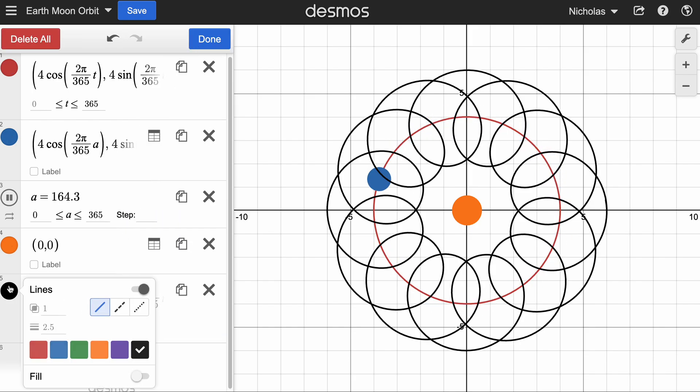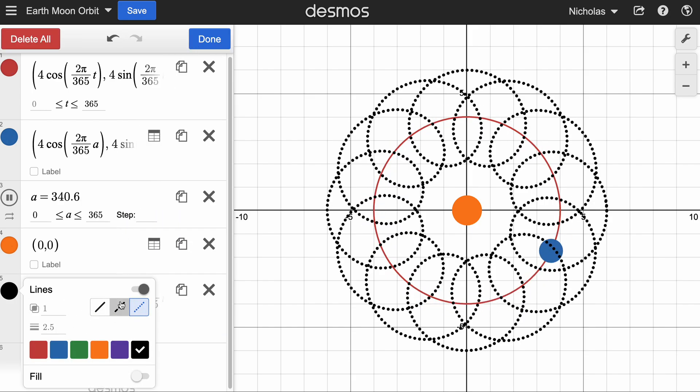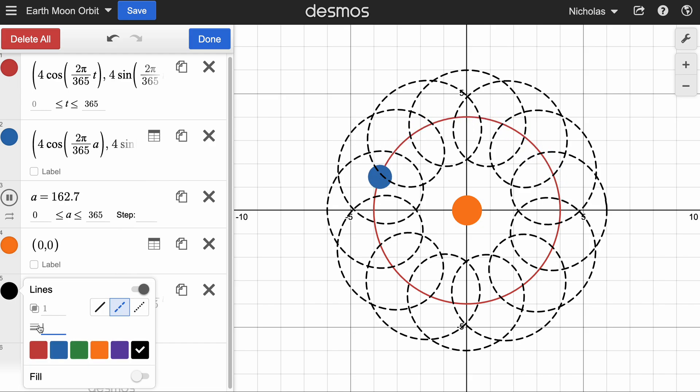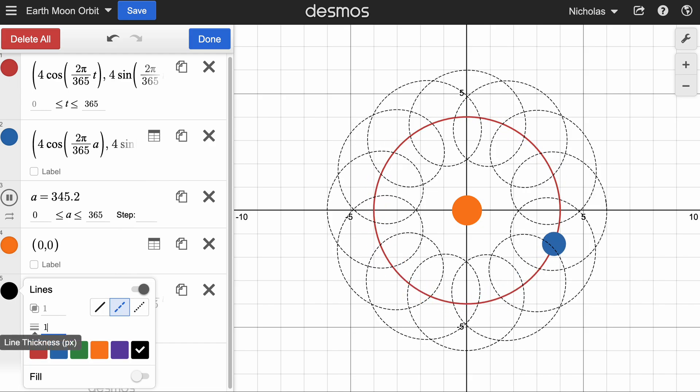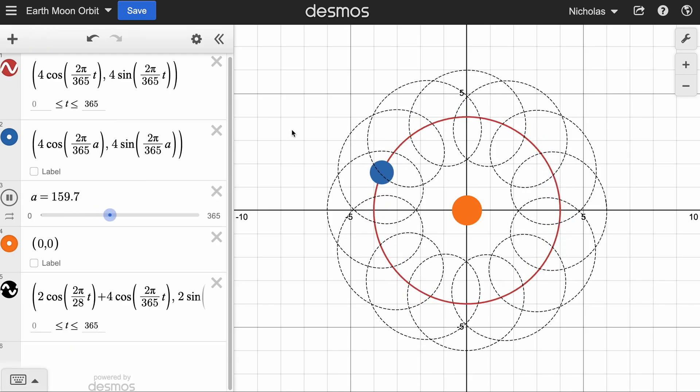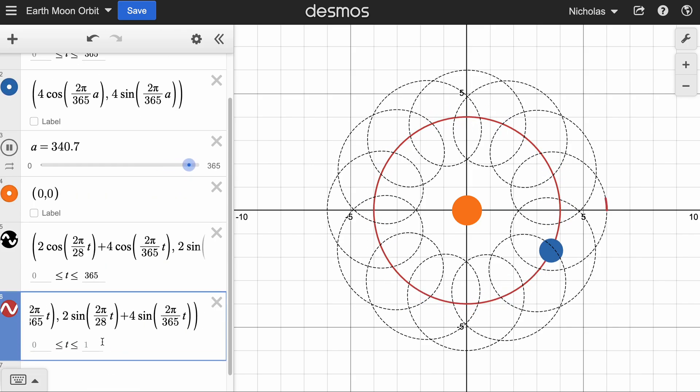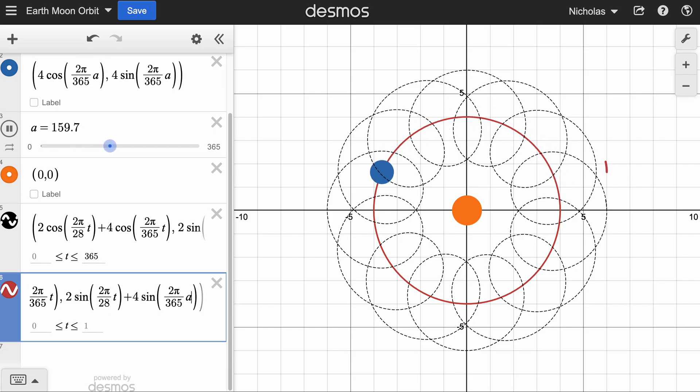So let's tone that down a bit because that's intense. So we'll do dotted lines, and we'll make them just one. So that's the path that the Moon's going to take around the Earth. And I bet you'd like to see what exactly does that look like as we animate it? So we're going to replace all these T's with the A.